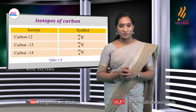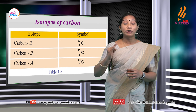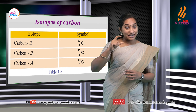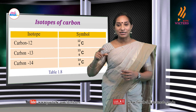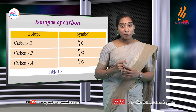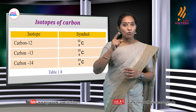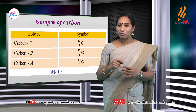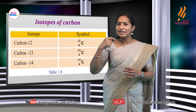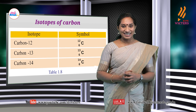Carbon has three naturally occurring isotopes: C-12, C-13, and C-14. Among these, two isotopes are very stable, and C-14 is unstable — it is a radioactive isotope.